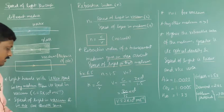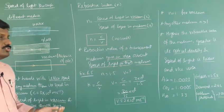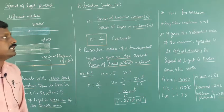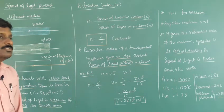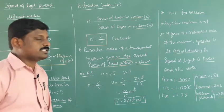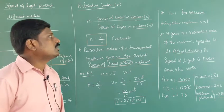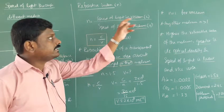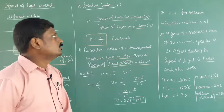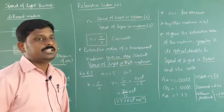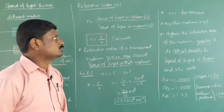The speed of light in vacuum and air is almost the same — not exactly the same, but almost the same. Now let's look at refractive index. The refractive index of a transparent medium is the ratio of the speed of light in vacuum to the speed of light in that medium.